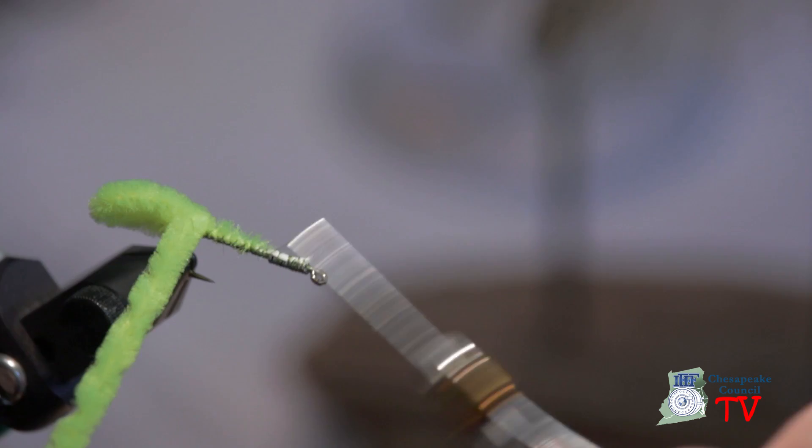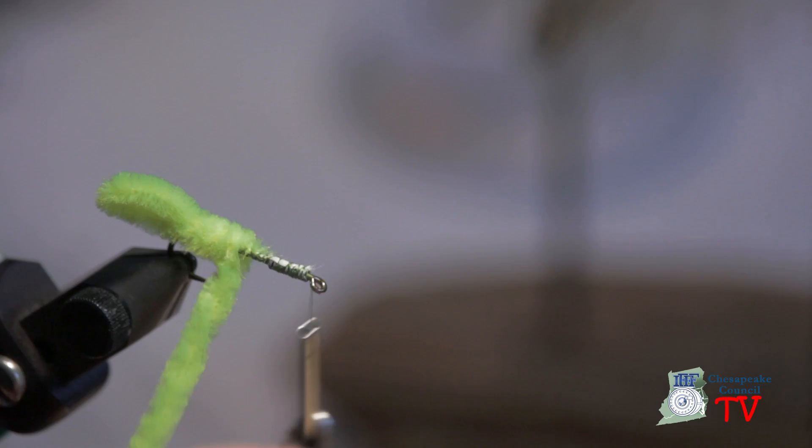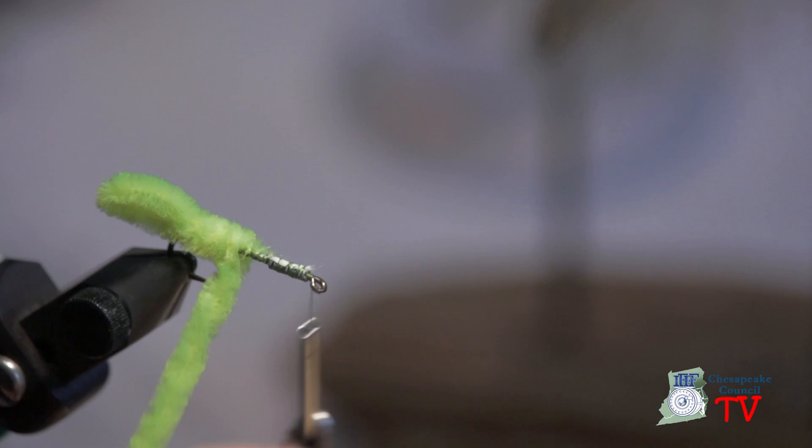Take it up to the front. Like this. Bring this around here. Nice tight loops. This fly works on a variety of fish. Trout, bass, shad, carp. All kinds of panfish.